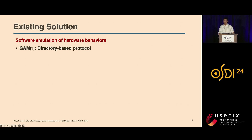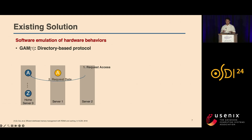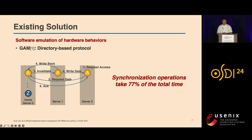Consider GAM, a state-of-the-art system that utilizes a directory-based method for maintaining coherence. This figure shows a simple example of memory access in GAM. Blue nodes A and Z are data blocks on server zero, and yellow node A represents a mutated cache copy on server one. When server two is going to access data, GAM requires a complicated synchronization process to check the state of the data block, invalidate any still-cached copies, and transfer the data to the requesting server. Our profiling of GAM shows that for a single remote data access, synchronization operations can take 77% of the time.